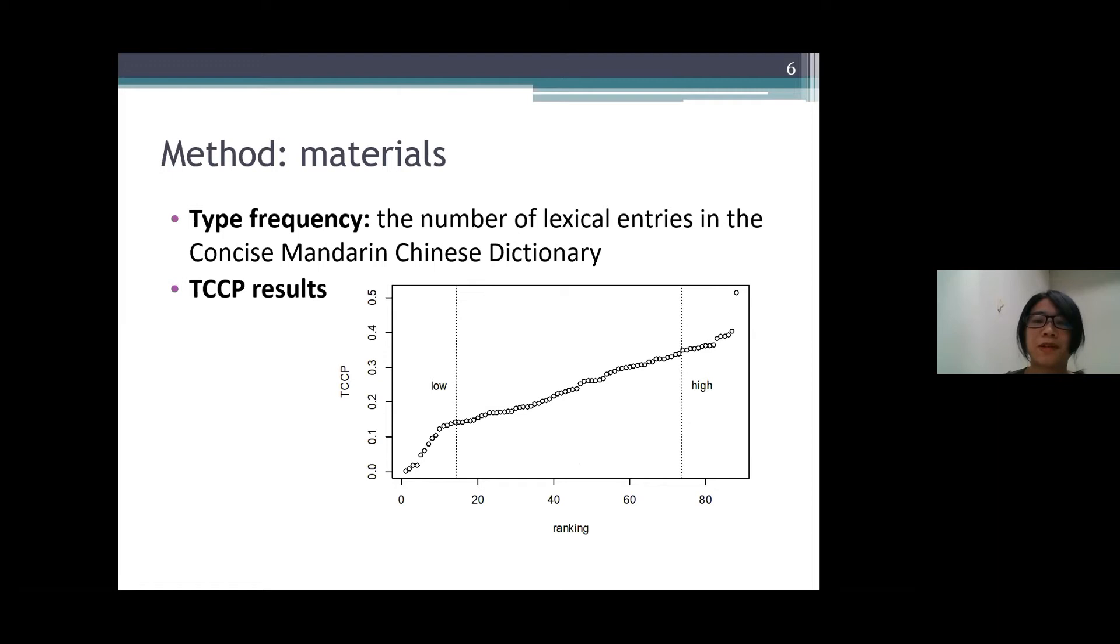And as described previously, we need the type frequencies to calculate TCCP. Here we approximate type frequencies as the number of lexical entries of a particular sound or sound combination in the Concise Mandarin Chinese Dictionary. And this figure here shows the resulting TCCP sorted for our consonantal onset-lexical tone combinations. The horizontal axis represents the ranking of that particular sound combination. The range of TCCPs was from almost 0 to almost 0.5, and the lowest 14 and the highest 15 combinations were considered as having low and high TCCP respectively.